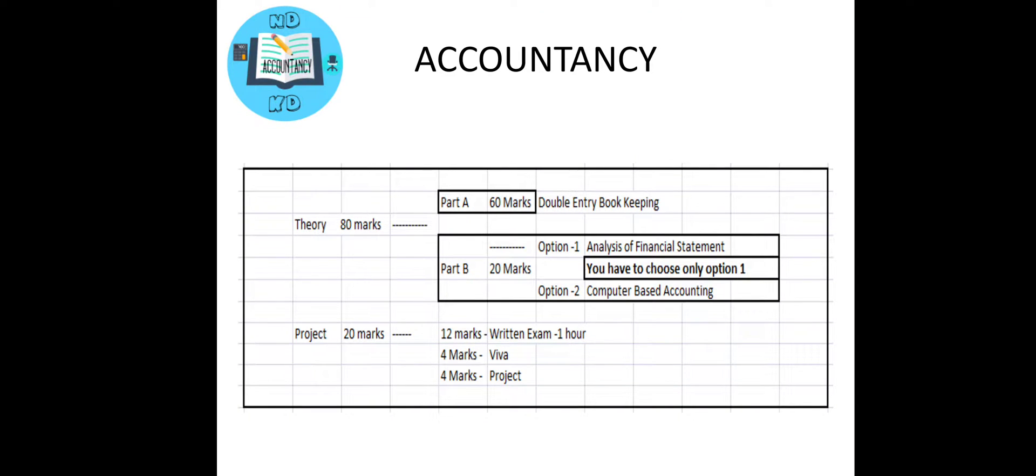Hello everyone. In your first session of Accountancy for Class 12, we are going to see the bifurcation of your exam. First of all, it is divided into two parts: the theory and the project. The theory contains 80 marks and the project contains 20 marks.